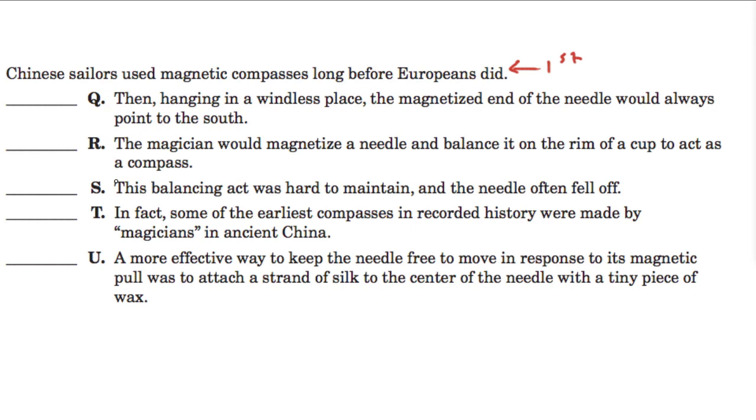So, scanning through these, if I jump down to T right here, I can see that it says, well, in fact, some of the earliest compasses in recorded history were made by magicians in ancient China. Now, this, for me, strikes me as the second sentence, because it's following up from the idea that Chinese sailors use magnetic compasses. That's what they're doing, long before Europeans did.